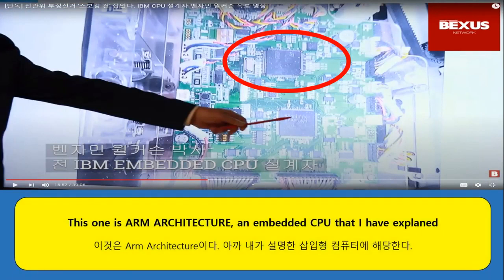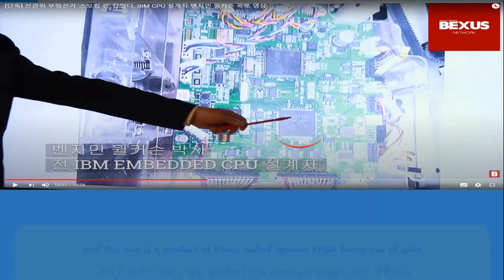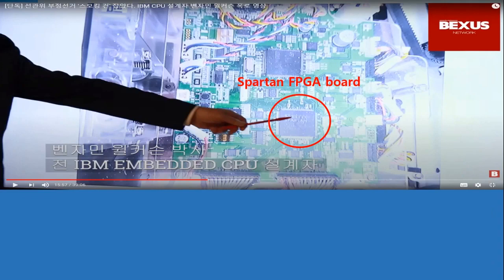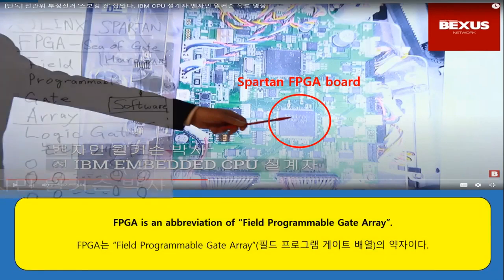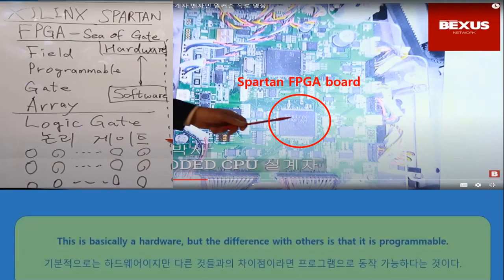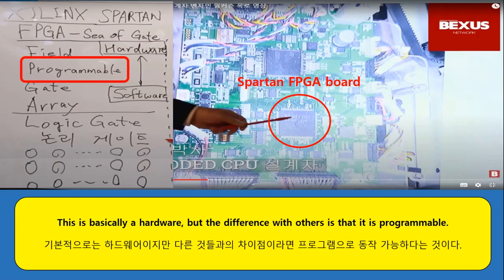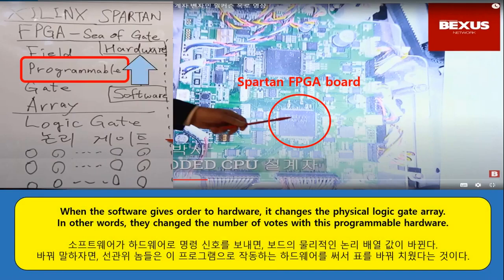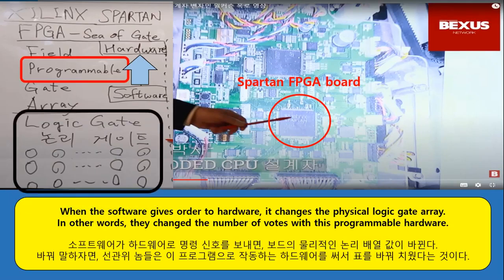This one is R-Mark Texture, an embedded CPU that I've explained. And this one is a product of Xilinx, the Spartan FPGA board — the gate. FPGA is an abbreviation for Field Programmable Gate Array. This is basically hardware, but the difference from others is that it's programmable. When the software gives an order to the hardware, it changes the physical logic gate. In other words, they can change the number of ports with this programmable hardware.